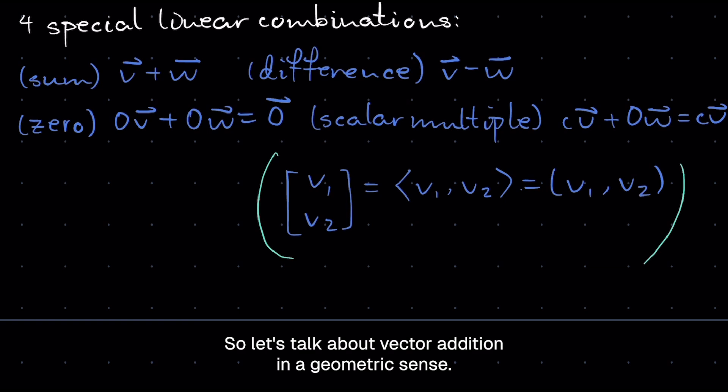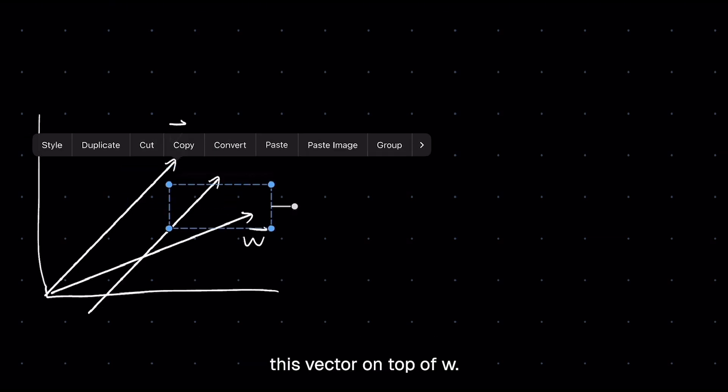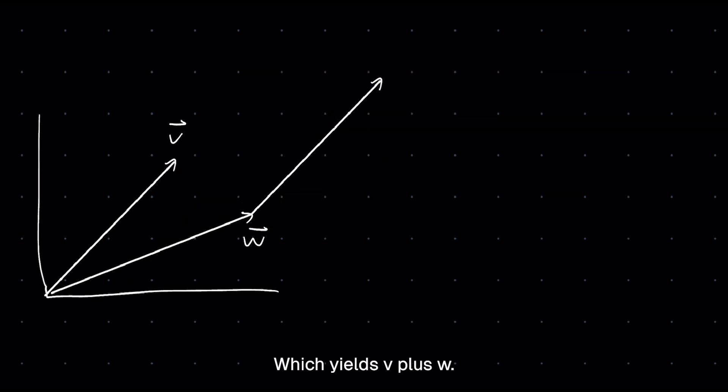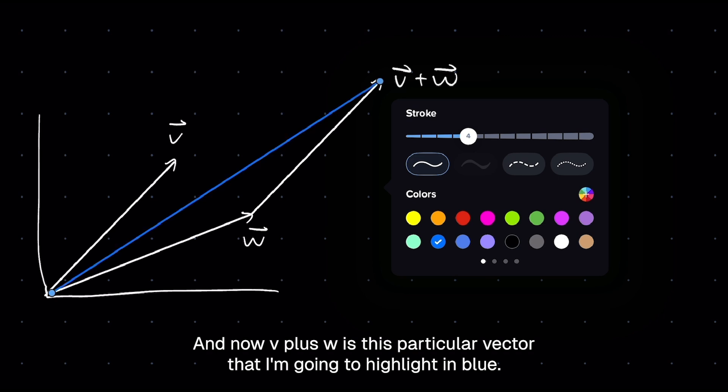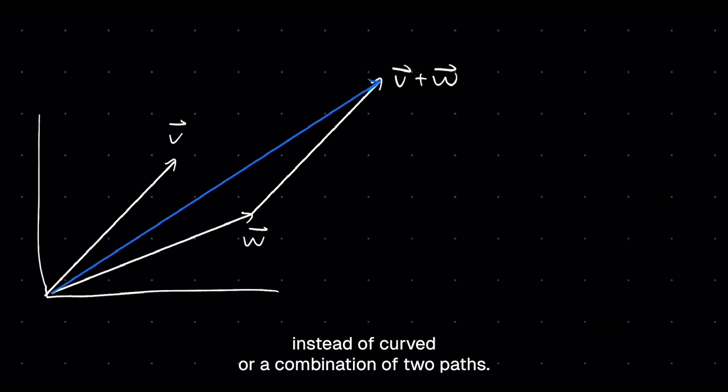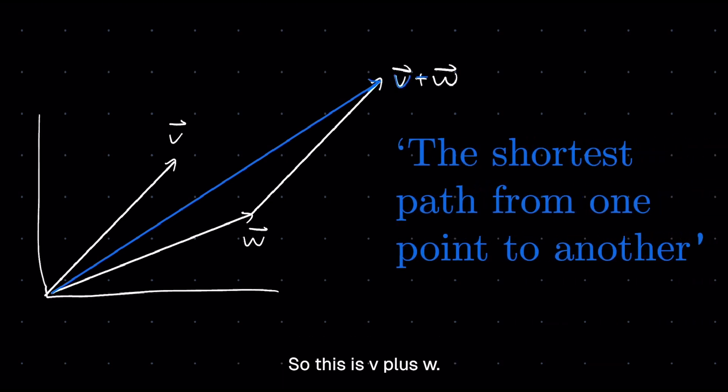Okay, so let's talk about vector addition in a geometric sense. Geometrically, say we have a graph and we have a vector V and we have a vector W. Vector addition is basically moving this vector on top of W, which yields V plus W. And now V plus W is this particular vector that I'm going to highlight in blue. Notice that vectors are straight lines instead of curved or a combination of two paths. They're all straight, so you can think of them as the shortest path from one point to another.